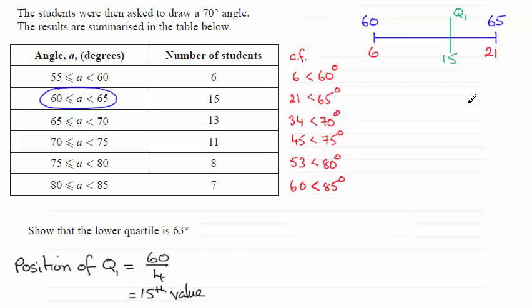And so we set up a ratio equation. We compare this interval here, the difference between Q1 and 60. So I put Q1 minus 60. And I compare that to the interval below it, which is 15 take away 6.